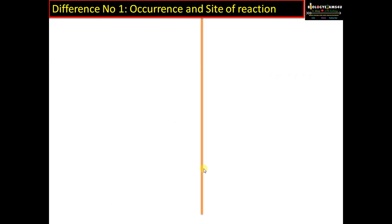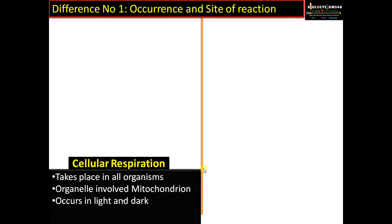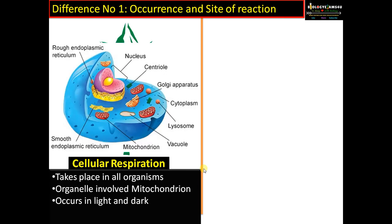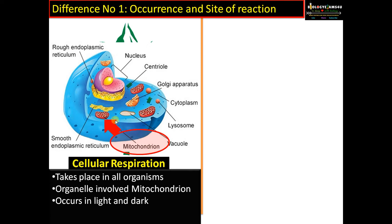Difference number one: occurrence and site of reaction. Cellular respiration takes place in all organisms — in plants, animals, fungus, bacteria — in all living cells, irrespective of whether they are chlorophyllated or non-chlorophyllated. The organelle involved is the mitochondrion. Majority of the energy is synthesized in the mitochondrion, that's why it is called the powerhouse of the cell. The process takes place both in dark and light, happening 24/7 for deriving energy for all cellular activities.